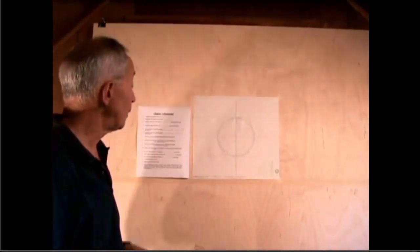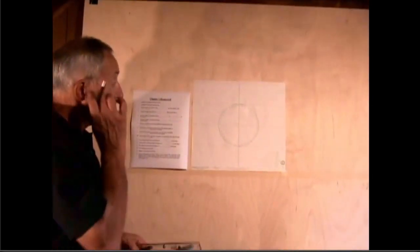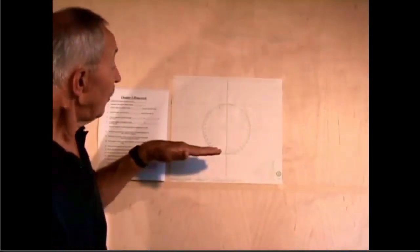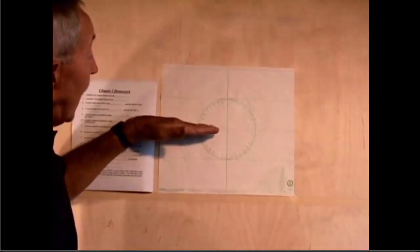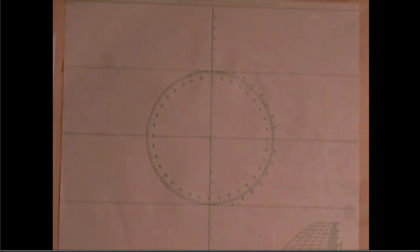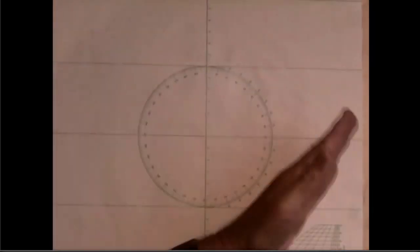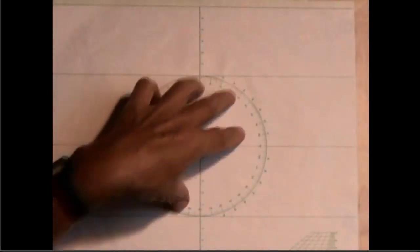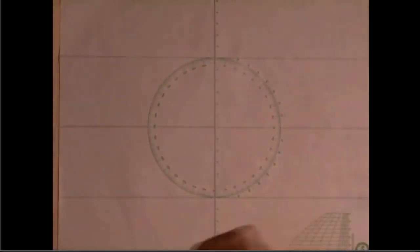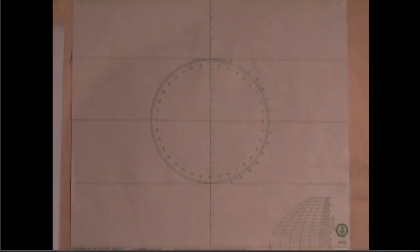Now this is a Universal Plotting Sheet and as you see on here there are lines of latitude. There's one central line of longitude but there are no other longitude lines drawn on here. There's a true compass rose in the middle and there's also this little scale down here which we'll talk about in a few minutes.